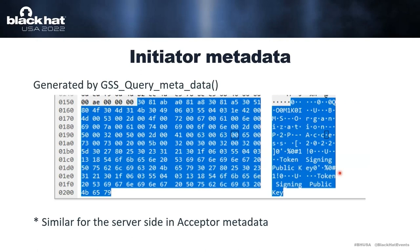The second message, also from client to server, is the Initiator Metadata, which contains metadata about the authentication materials to be used. In the dump you can see a token signing public key — indicating a certificate will be used — and MS Organization P2P Access, which is the Azure AD P2P certificate authority. The server then responds with Acceptor Nego and Acceptor Metadata messages, which are the same types containing a different random nonce and the same metadata generated from GSS Query Metadata. This is the initiating part of NegoX — it doesn't really do anything critical.